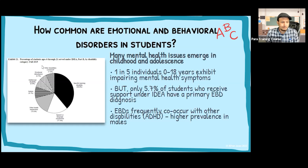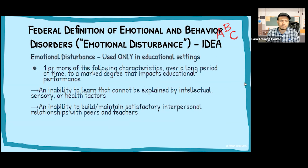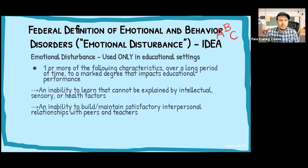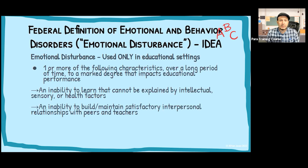Under IDEA, this will be classified under emotional disturbance. Under IDEA, emotional disturbance is the term set at the federal level, and states can interpret it. This term is used only in educational settings. One or more of the following characteristics over a long period of time to a marked degree that impacts educational performance have to be present. The first is an inability to learn that can't be explained by intellectual, sensory, or health factors — the person just seems unable to learn and none of these things seem to be the cause.